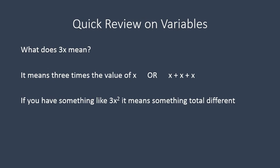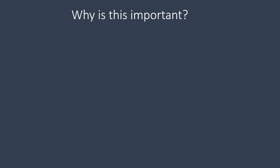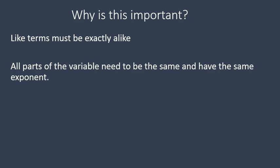If you have something like 3x squared it means something totally different than 3x. It does not mean the same thing. It means 3 times x squared or x squared plus x squared plus x squared. So these terms that look similar 3x and 3x squared they look similar but they're not exactly the same. And because we're doing different operations addition and an exponent of x to the power of 2 you can't combine them together. They're totally separate, totally different. So I just wanted to do that just to kind of break apart our variables and show you that even if they look similar unless they're exactly the same you can't join them together. And why is this important? Like terms have to be exactly alike. They need to be exactly the same because all parts of the variable and the parts of the exponent all have to have exactly the same thing.